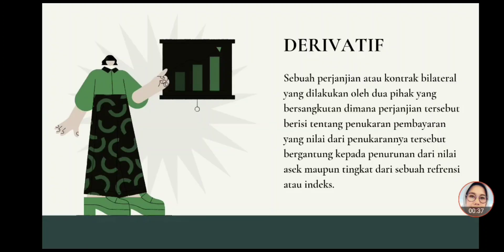Apa itu derivatif? Menurut Kurniawan dan Layla, derivatif adalah sebuah perjanjian yang dilakukan oleh dua pihak, di mana pihak tersebut dikenal dengan sebutan kontrapartis atau sering disebut juga dengan pihak yang saling berhubungan. Derivatif memiliki arti sebagai sebuah kontrak di mana sebagian besar dari kontrak tersebut memiliki nilai yang berasal dari aset, indeks, maupun kurs sebagai underlyingnya.